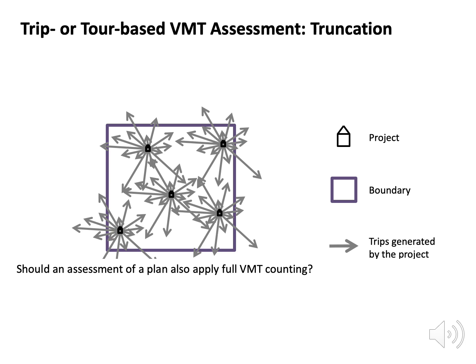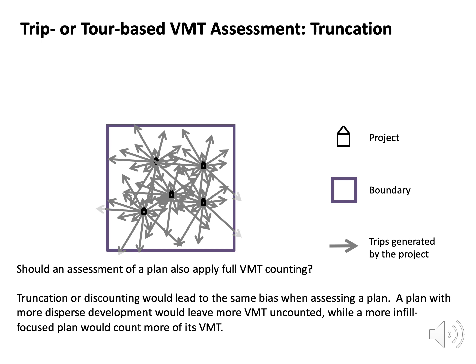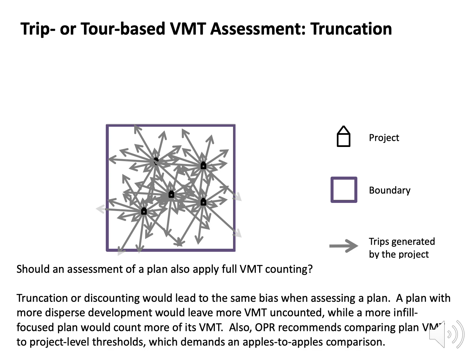But is it important to assess full trips for the development of a plan? Yes, it is important to count VMT impacts from plans over full trips over the full area the plan affects travel patterns. Consider a plan like this one with more dispersed development — truncating VMT analysis at the plan boundary would leave more VMT uncounted, while a more infill focused plan like this one would count a greater share of its VMT. That's a bias. Also, OPR recommends applying thresholds for projects to new developments specified in the plan. The plan VMT to threshold VMT comparison also needs to be apples to apples, so both should represent full counting.